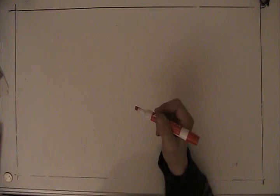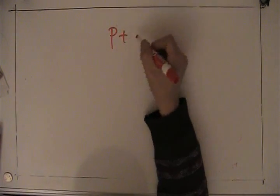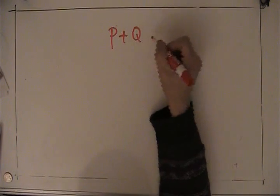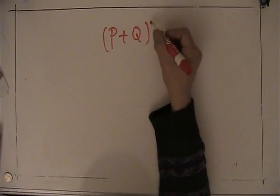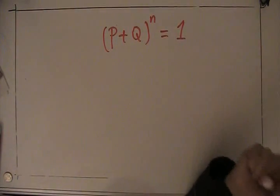Okay. The binomial distribution uses sort of a strange argument. It says that P plus Q to the N equals one.